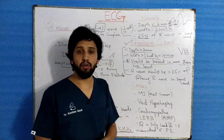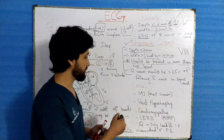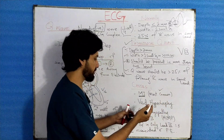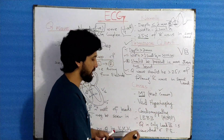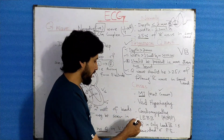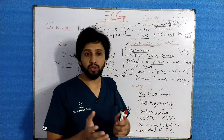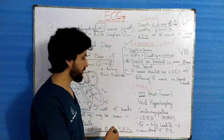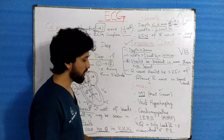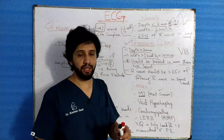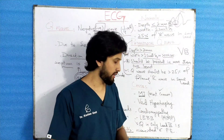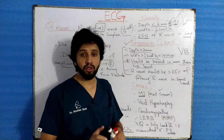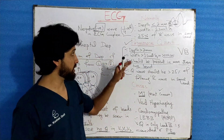Now coming to the causes: the most common cause of pathological Q wave is myocardial infarction, then ventricular hypertrophy, cardiomyopathy, left bundle branch block (LBBB), and lead misplacement — in lead misplacement, pathological Q waves can also be seen. An important point: if a Q wave is only in lead III, this is associated with pulmonary embolism and must never be neglected.